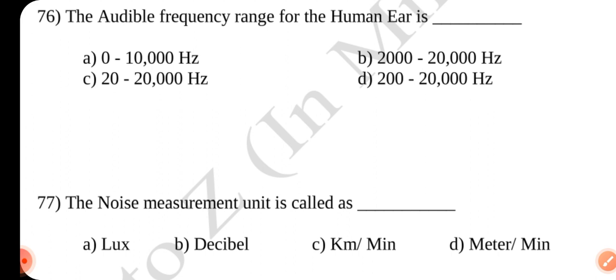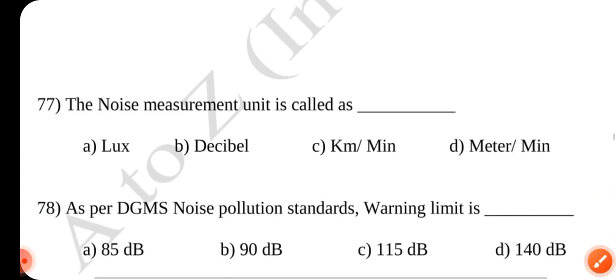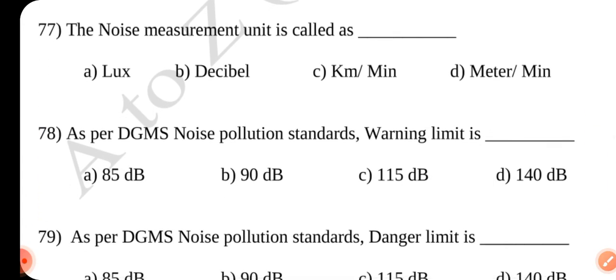Question number 76. The audible frequency range for the human ear is dash. Answer is C 2 to 20,000 hertz.